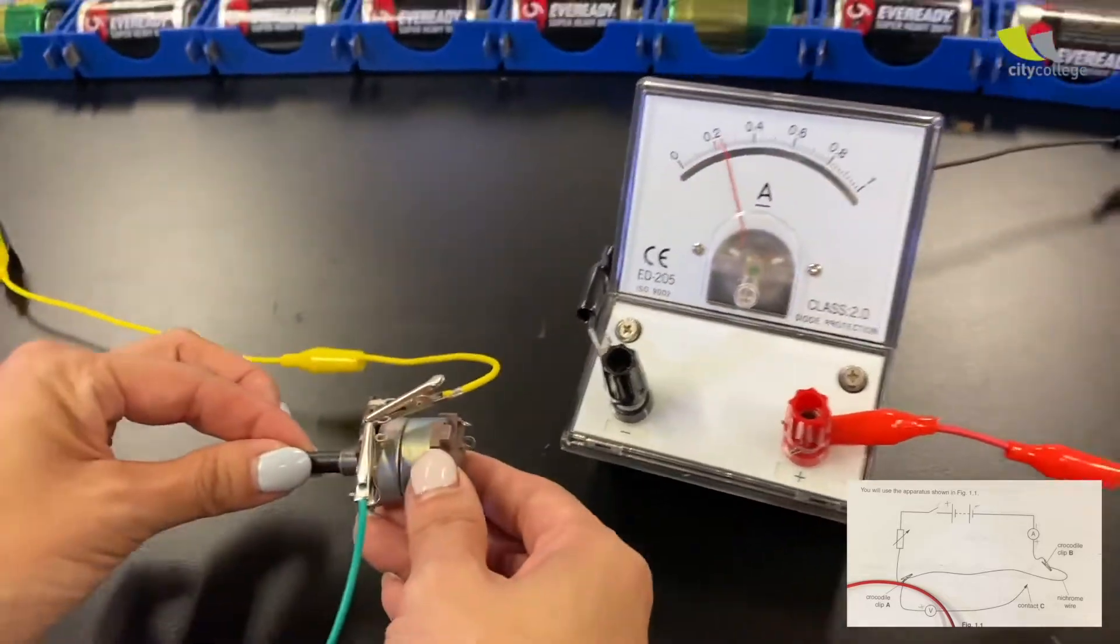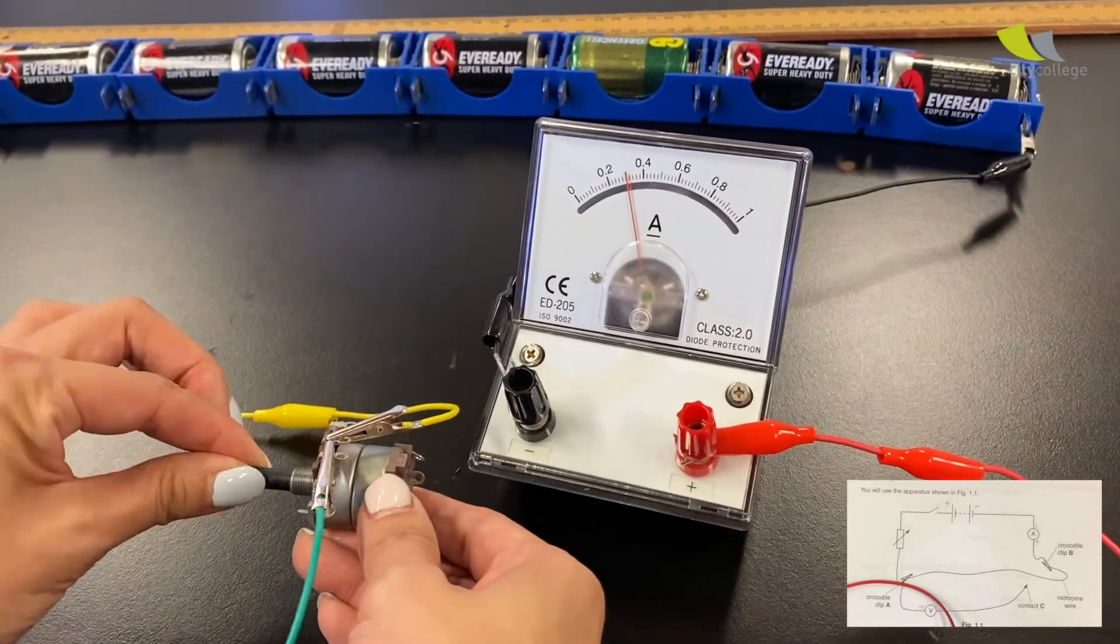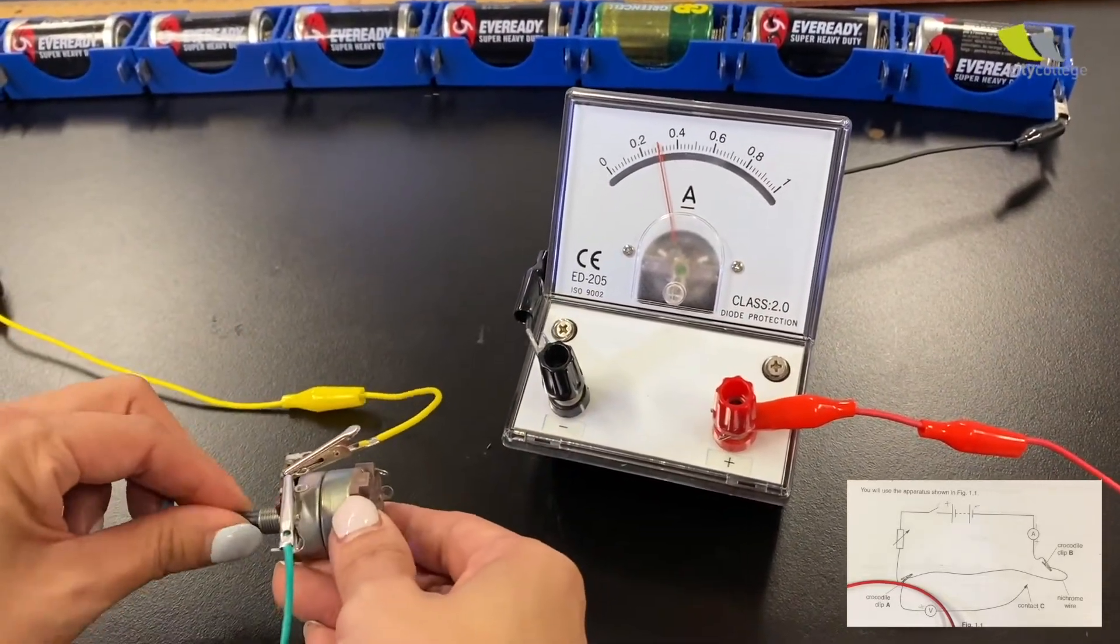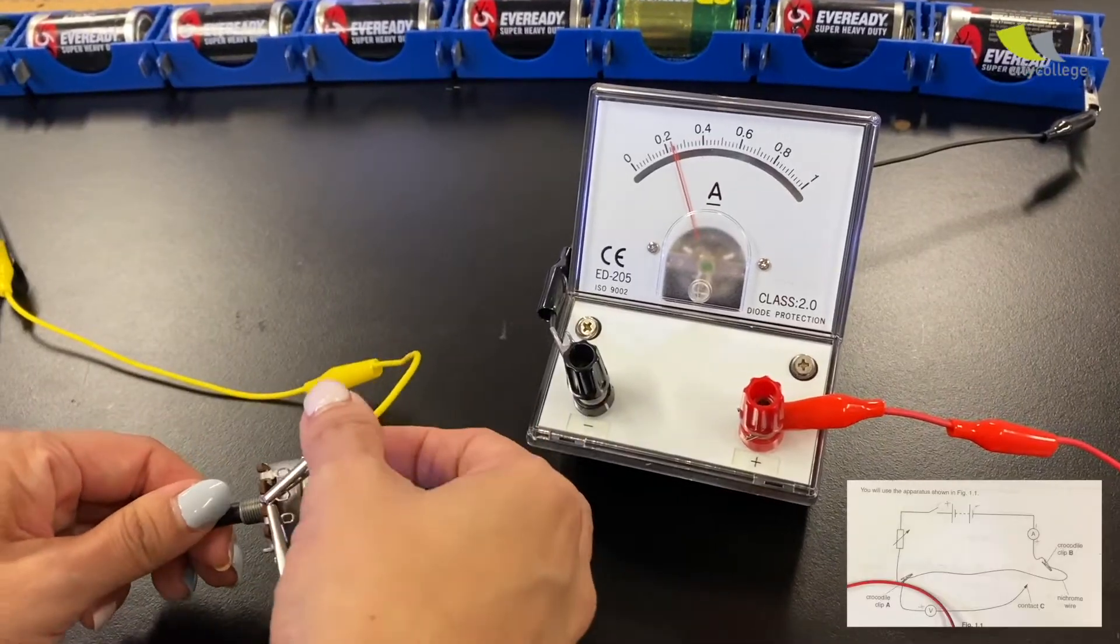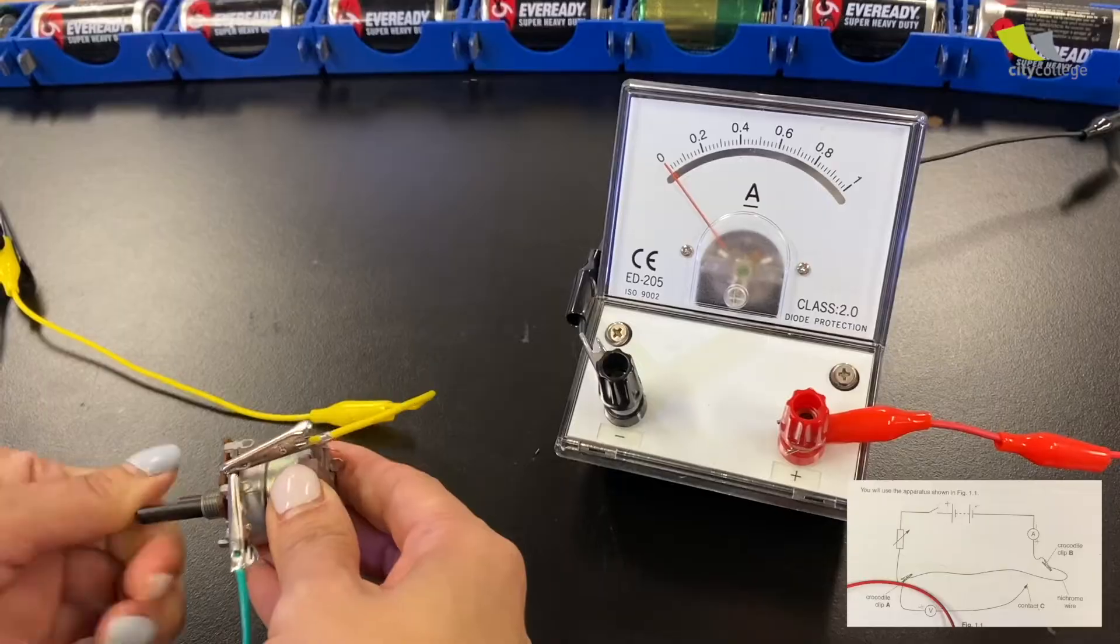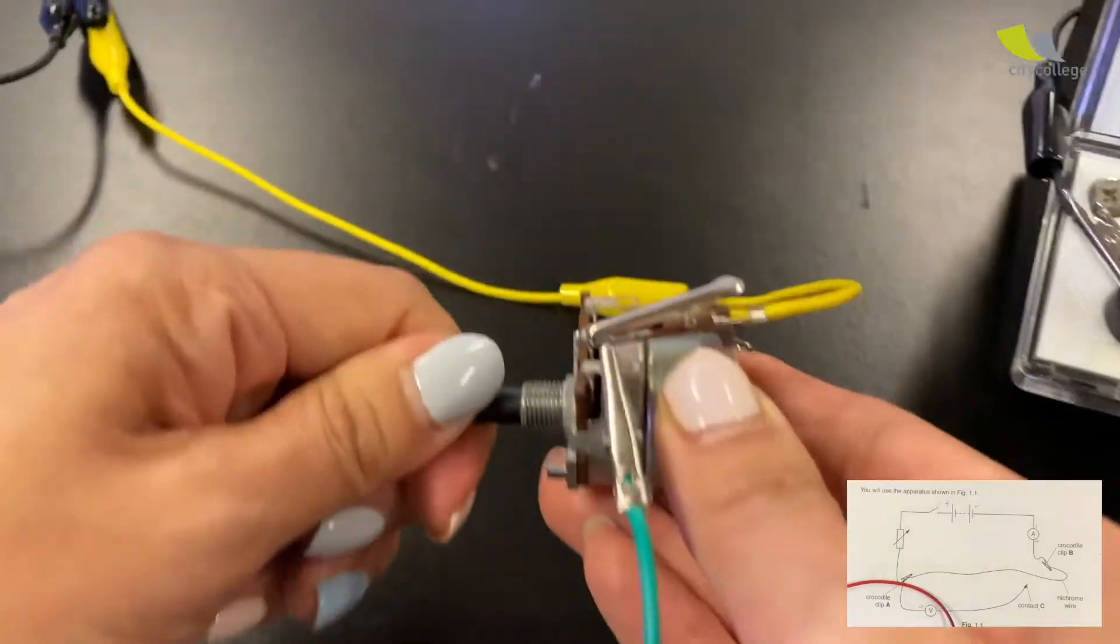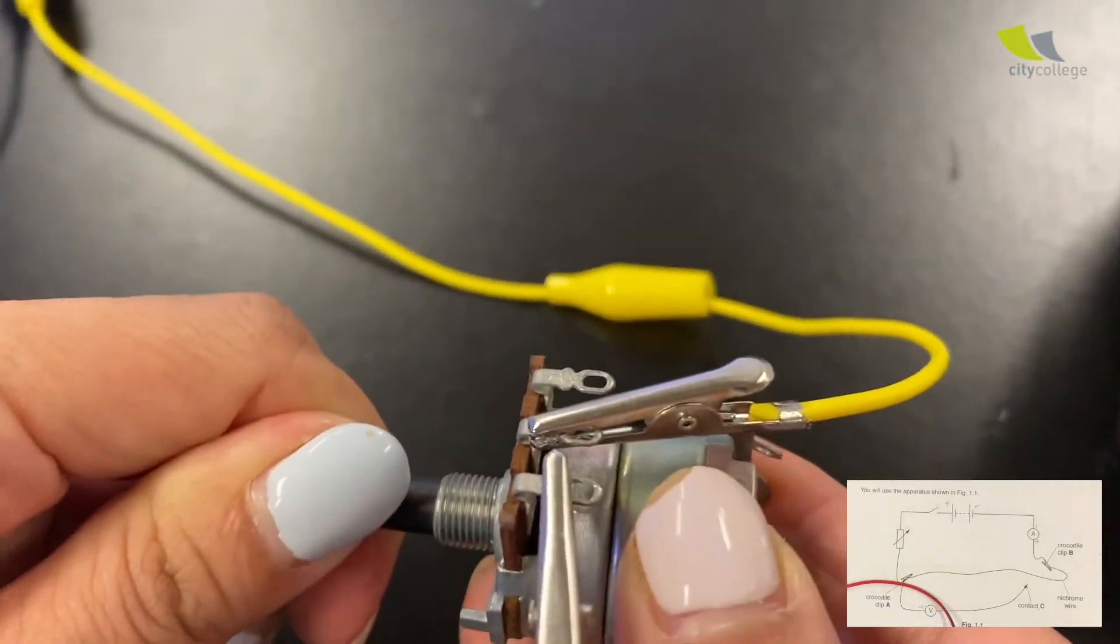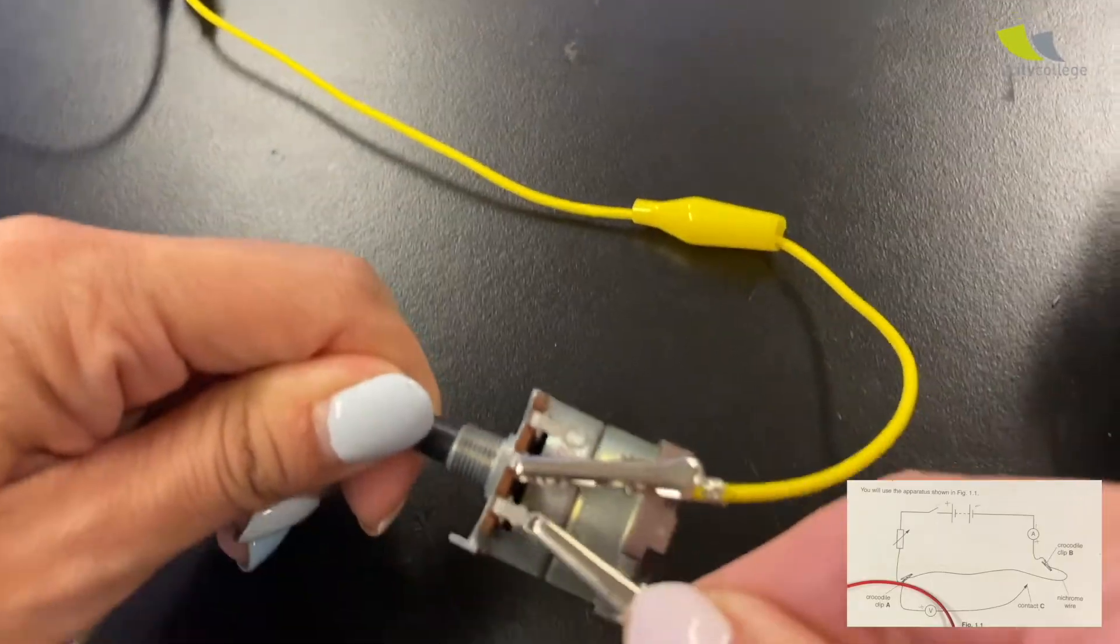See? So you get a reading. So you see? As she turns the variable resistor. Okay. Let me put this closer. And bring it closer. Yeah. As she turns the variable resistor. So you are adjusting the current. Yeah. Okay. So you have to be careful.